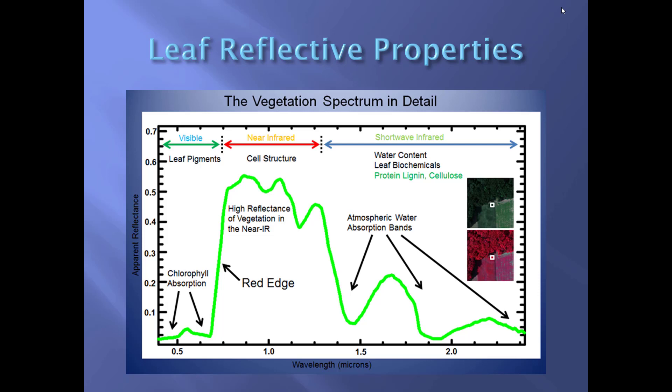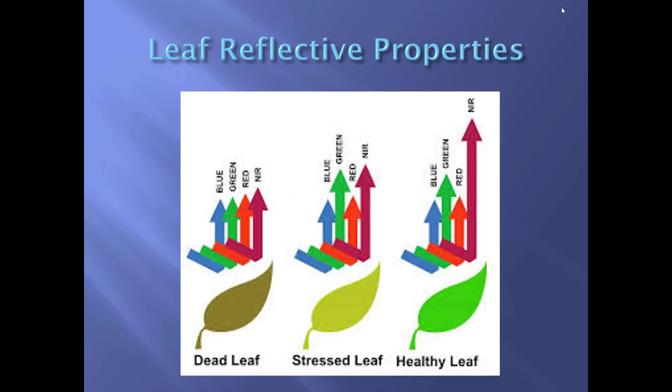NDVI makes use of values from the same pixel in a scene. A diagram shows arrows sized according to relative amounts of reflection: a dead leaf has low reflection of blue, green, red, and near infrared; a stressed leaf has slightly higher reflections of green and near infrared; whereas a healthy leaf has very high reflections of near infrared.